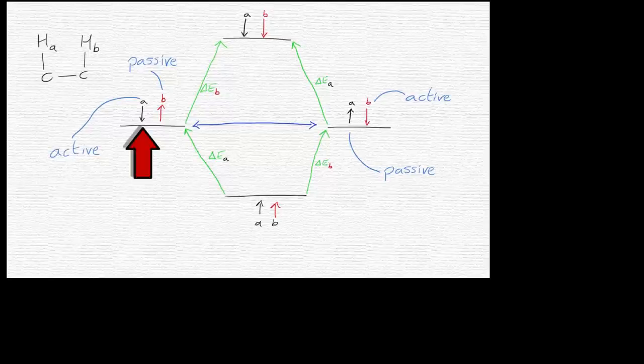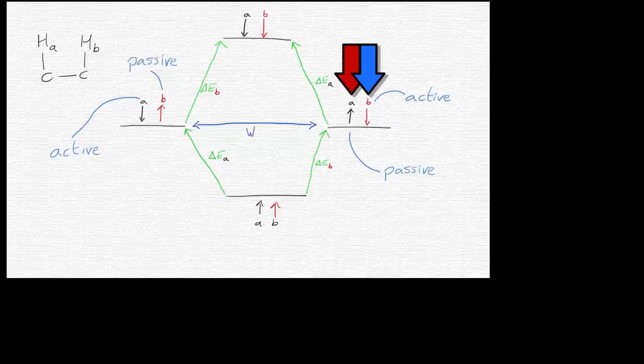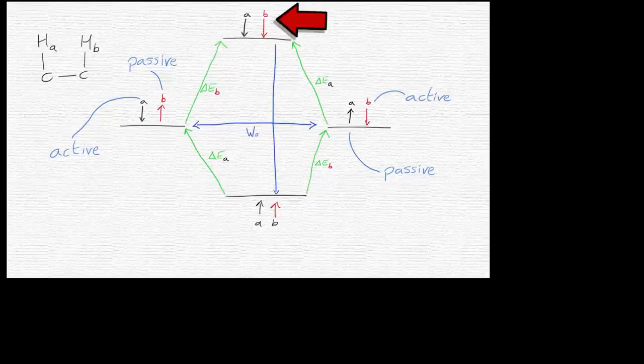And also, if we look at the B spin, that goes from an up to a down spin state. This gives an overall zero quantum coherence transfer. This is called a cross-relaxation pathway, and we'll talk about that in another tutorial.